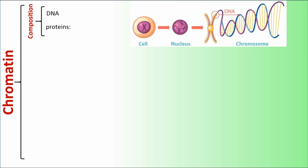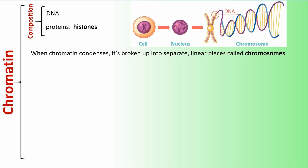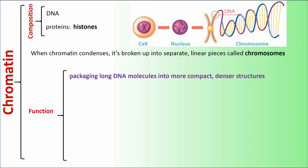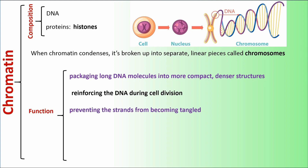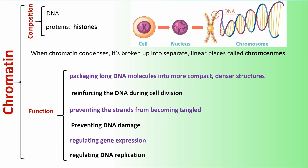Chromatin has two compositions: DNA and proteins called histones. When chromatin condenses, it is broken up into separate linear pieces called chromosomes. The functions of chromatin include packaging long DNA molecules into more compact, denser structures, reinforcing the DNA during cell division, preventing the strands from becoming tangled, preventing DNA damage, regulating gene expression, and regulating DNA replication.